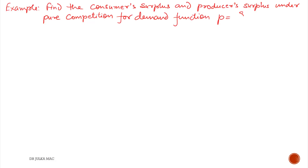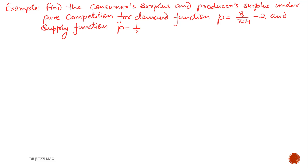Example 1. Find consumer and producer surplus under pure competition for the demand function p = 8/(x+1) − 2 and supply function p = (1/2)x + 3, where p is the price and x is the quantity.